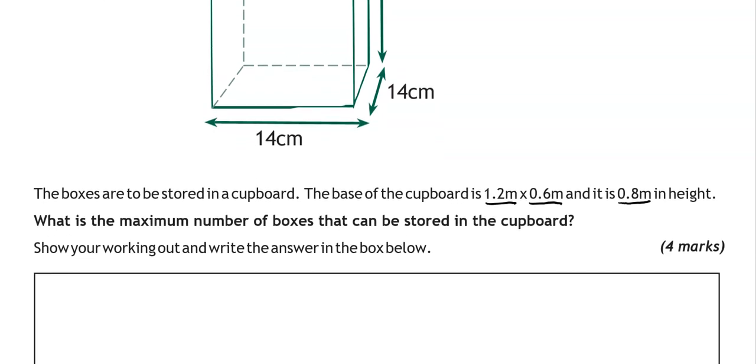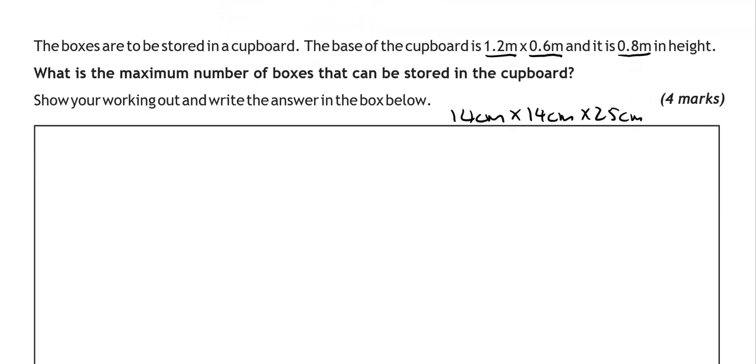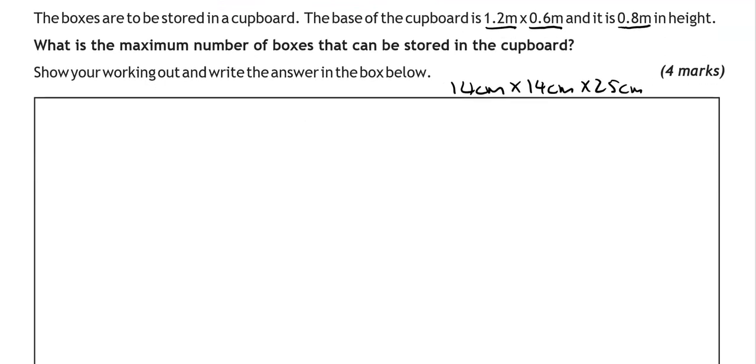So we've got the dimensions of the box in centimetres. 14cm by 14cm by 25cm. And we've got the dimensions of the cupboard in metres. So we're going to convert them to centimetres. You could do in metres and that's absolutely fine as well. So the height of the cupboard in centimetres is 80cm. And we've got the length and the width. So the length is 120cm and the width is 60cm.